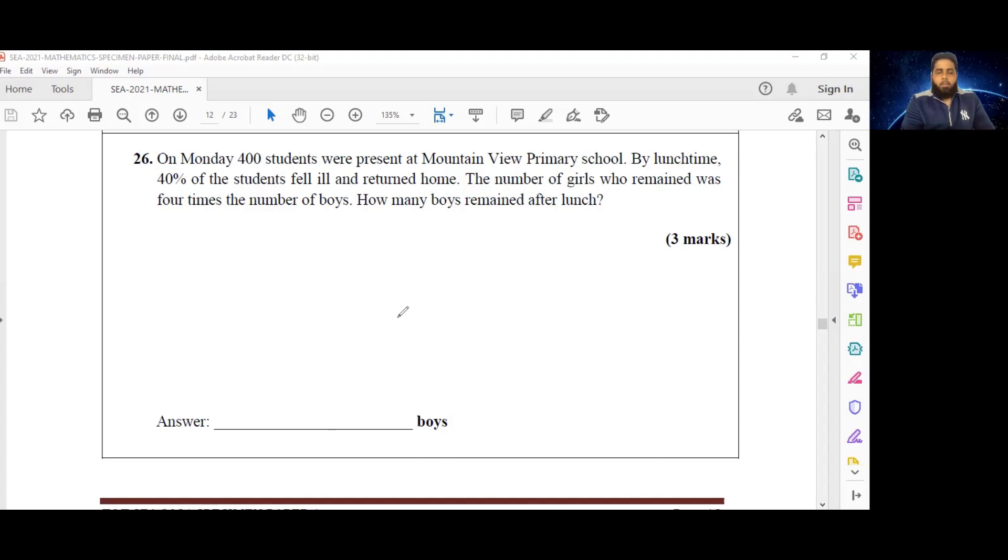Here we are with number 26, which reads: On Monday, 400 students were present at Mountain View Primary School. By lunchtime, 40% of the students fell ill and returned home. The number of girls who remained was four times the number of boys. How many boys remained after lunch?